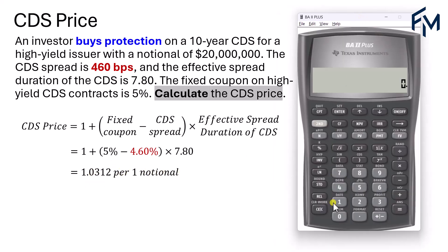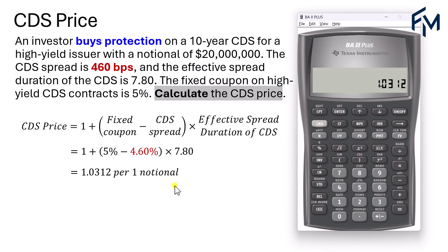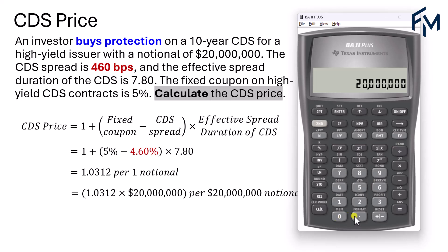To be careful with the calculation: take 1 plus bracket (0.05 minus 0.046) close bracket times 7.8, giving 1.0312 per one unit notional. Since the notional of the contract is $20 million, we multiply by $20 million and get $20,624,000. That is the CDS price based on the given notional.